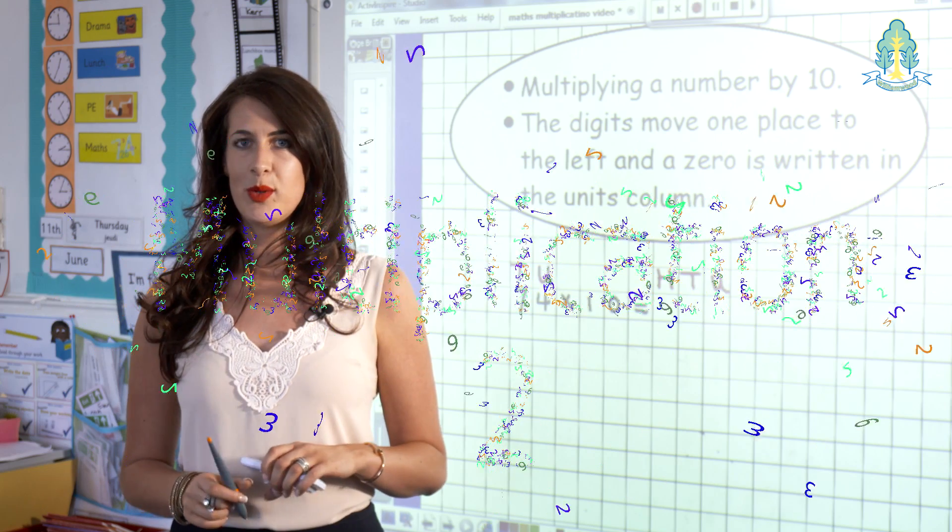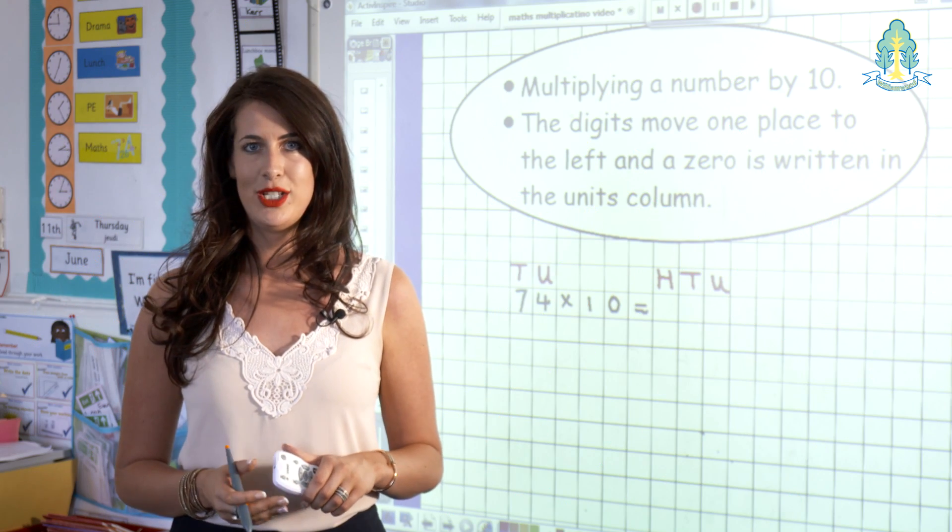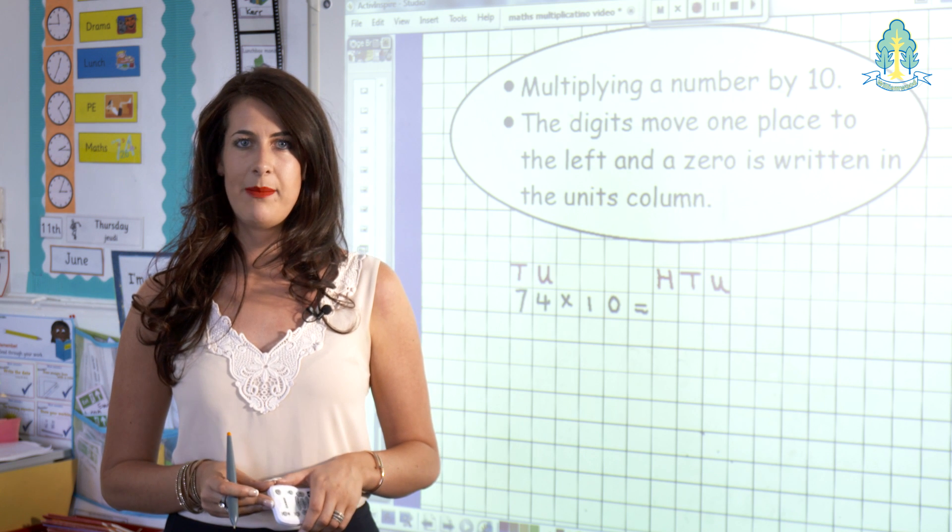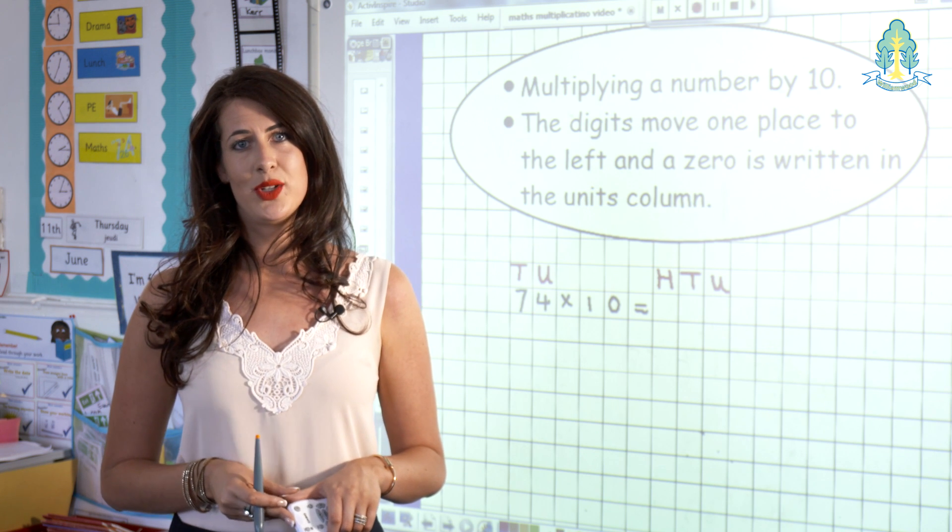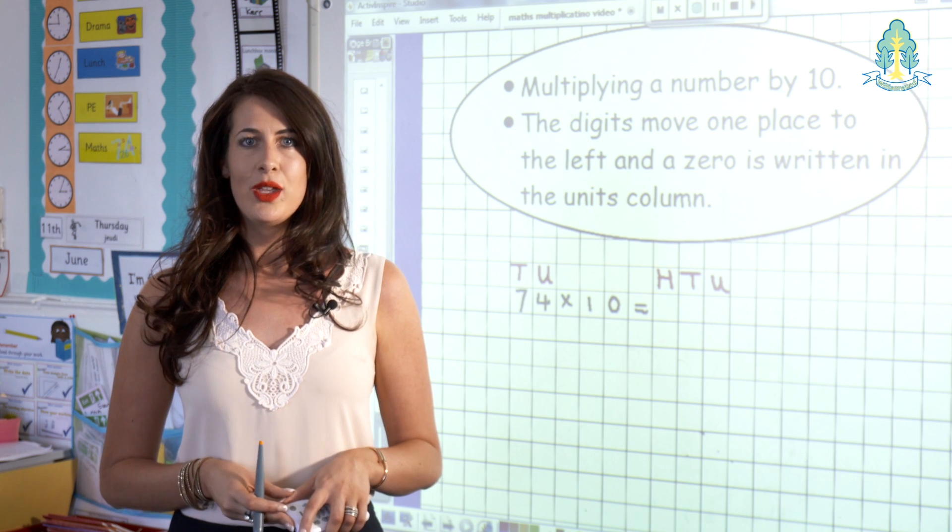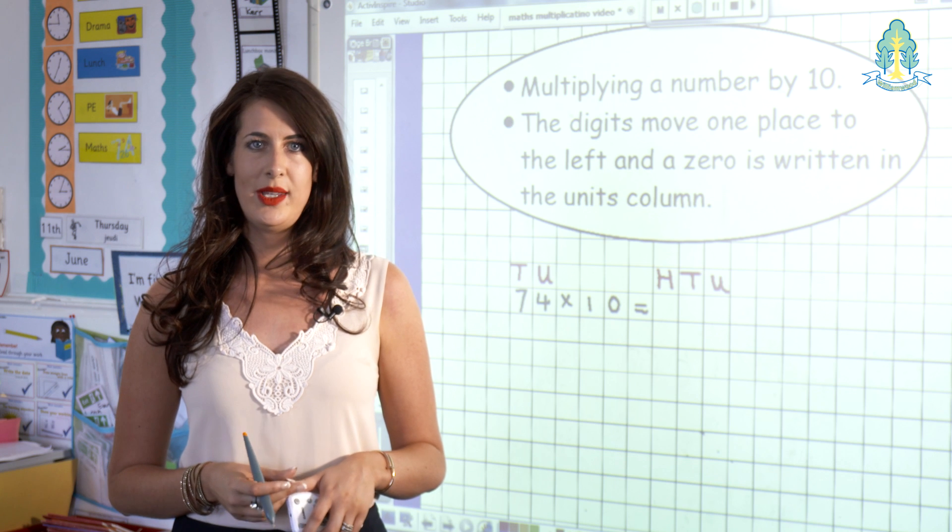In second level, pupils are taught to multiply a two-digit number by a two-digit number, known as long multiplication. This is a new strategy for them. I understand parents do this in different ways, and this film shows you how we teach at school so that you can help and support your child at home.